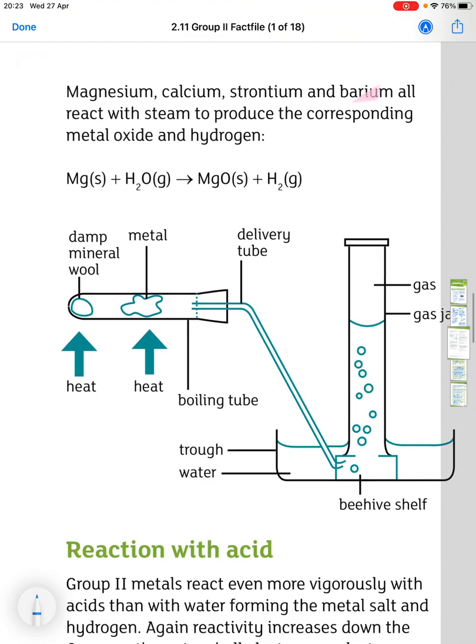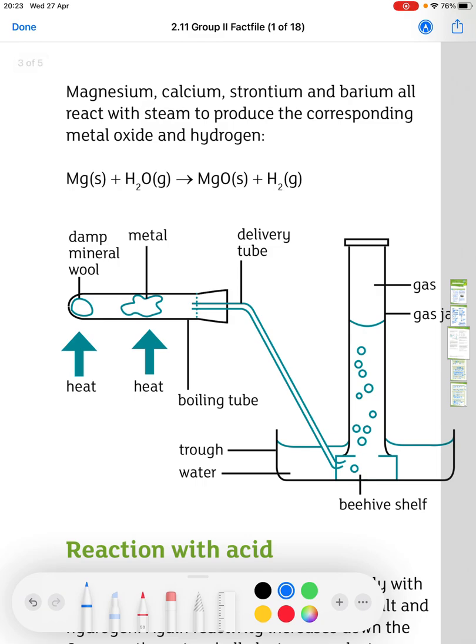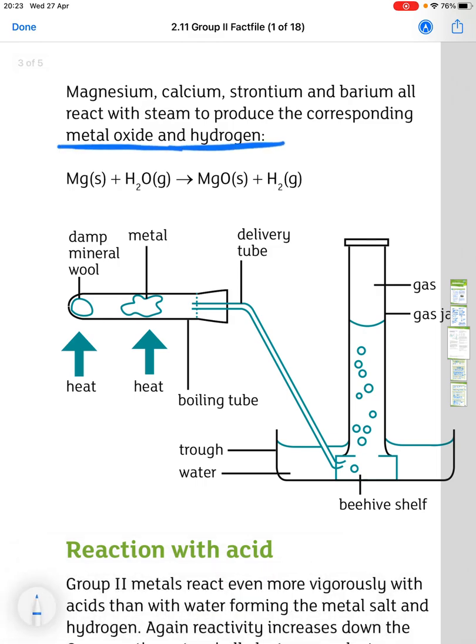Now, magnesium, calcium, strontium, and barium all react with steam to produce the corresponding metal oxide with hydrogen.